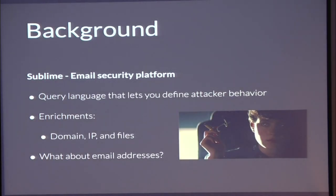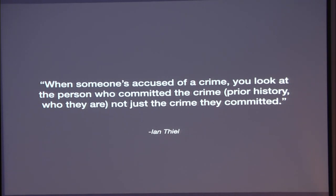Background and motivation: we're Sublime, building an open email security platform. We have a query language that lets you define attacker behavior. When a message comes into your environment, we tokenize it, break it down into parts, and enrich it — domain enrichments, IP enrichments, file enrichments. What we realized is: what about email addresses? We have all these different things we're looking at to determine whether something is suspicious, but why don't we do anything about email addresses? Ian Teal once said, when someone's accused of a crime, you look at the person, their prior history — not just the crime they committed. So why aren't we doing the same thing with email? We're looking at links and attachments, but not the sender. What do we know about the email address that's sending the message? That's the inception story of how we started thinking about email reputation.